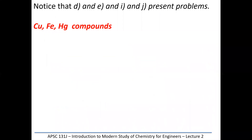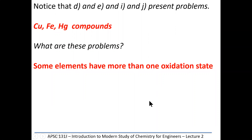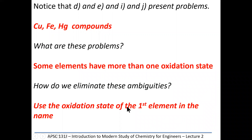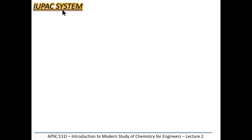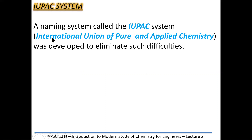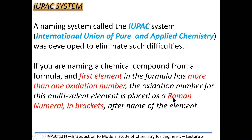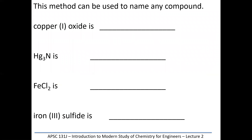We eliminate those ambiguities by using the oxidation state of the first element in the name. This is a standard system devised by the International Union of Pure and Applied Chemists — an organization called IUPAC — and it was designed to avoid confusion. They use Roman numerals in brackets for the oxidation state of the first element: I for one, II for two, III for three, IV for four, V for five, VI for six, VII for seven, VIII for eight.